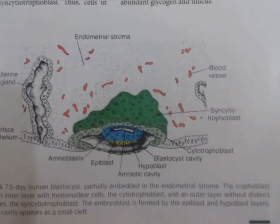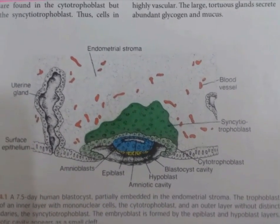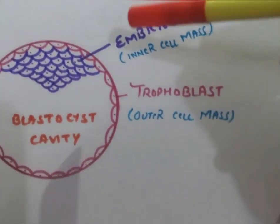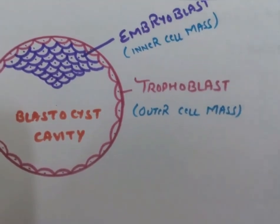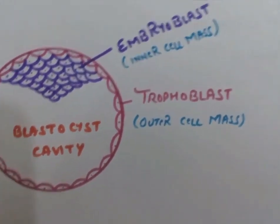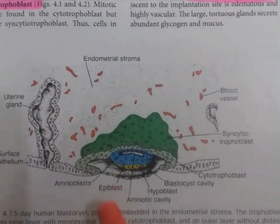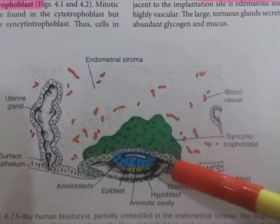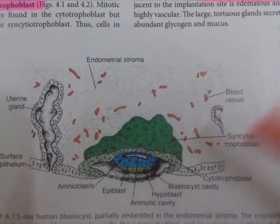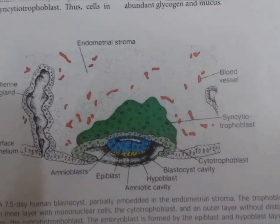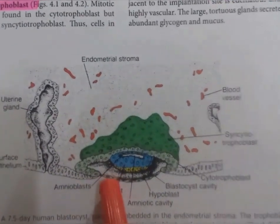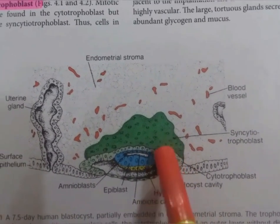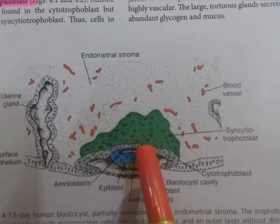On day 8, as the blastocyst gets implanted in the uterine epithelium, the trophoblast and the embryoblast each get divided into two parts. The trophoblast divides into the cytotrophoblast and the syncytiotrophoblast after entering into the uterine stroma, whereas the embryoblast divides into the epiblast and the hypoblast.